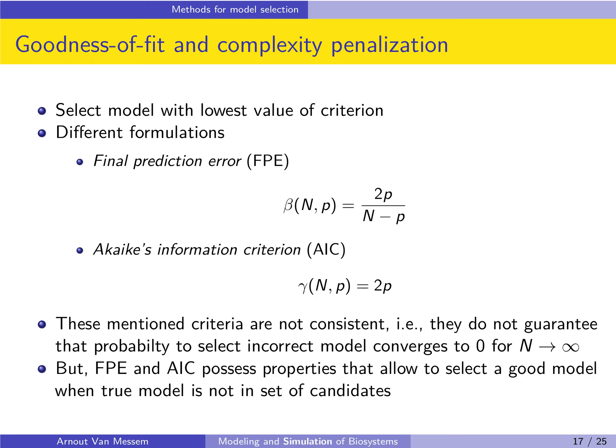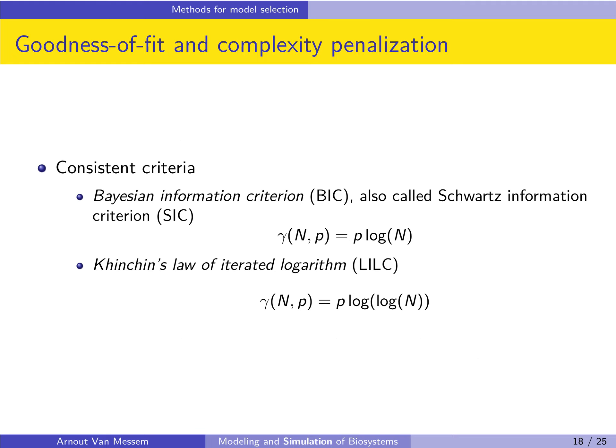Two consistent criteria are the Bayesian Information Criterion (BIC), also called the Schwarz Information Criterion (SIC), where gamma is defined as p times the logarithm of N; and Khinchin's Law of the Iterated Logarithm (LILC), where gamma is p times a double logarithm of N. BIC and AIC are still the most commonly used criteria. You calculate the criterion value for each candidate model, rank them, and select the model with the smallest value — this is your optimal model.